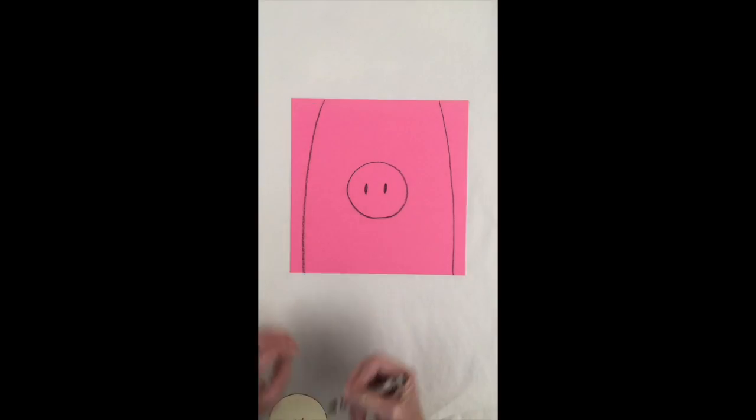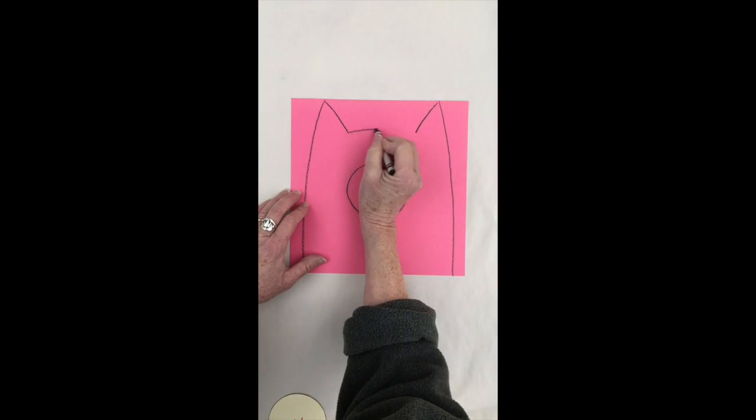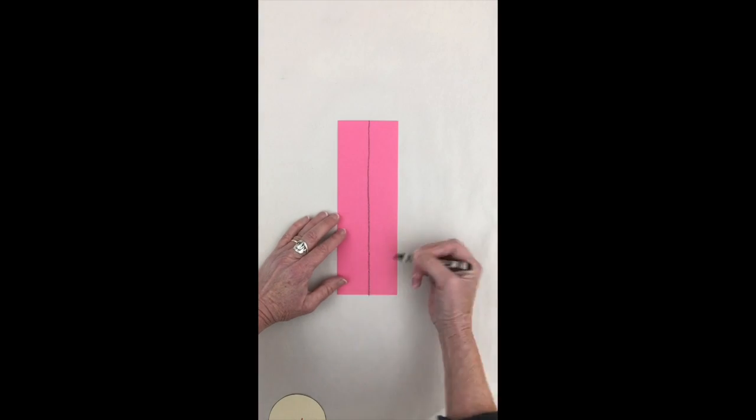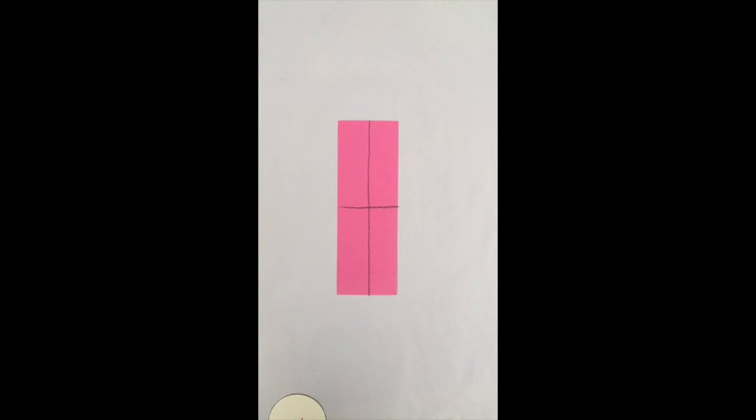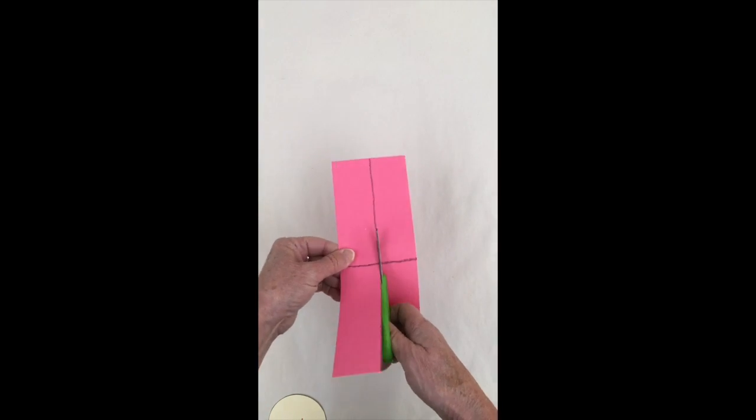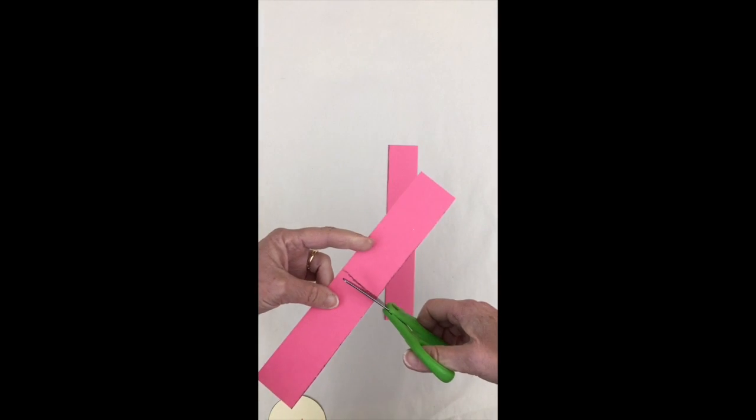We're making really gentle lines for the edges of his head and look, that whole square is his head. Here's how I'm going to make the legs. I'm going to divide my paper in half and in half again and then I'm just going to cut.